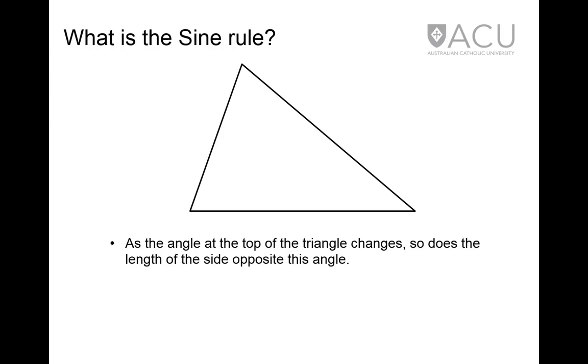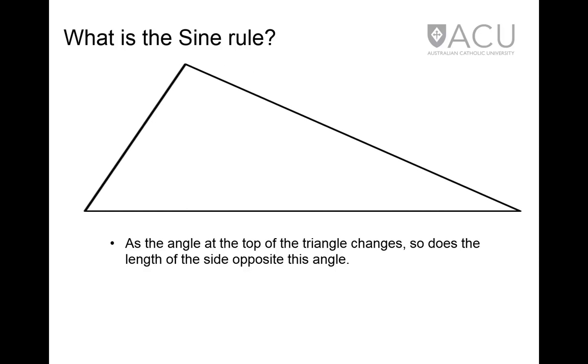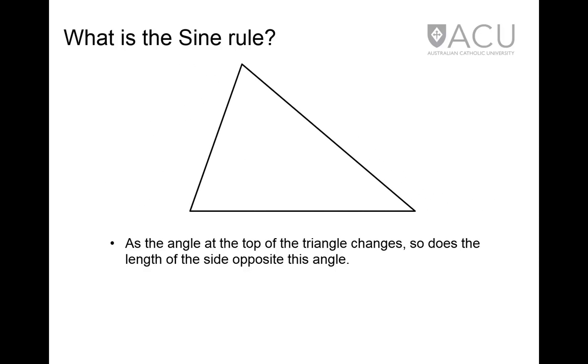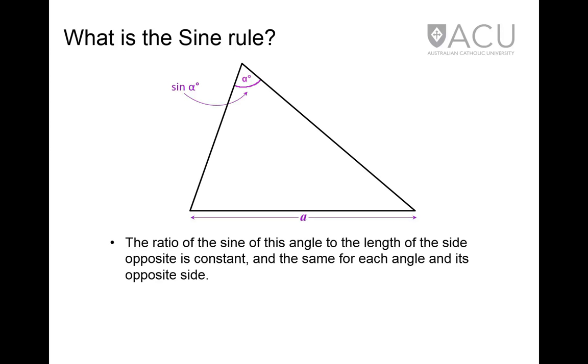Watch the angle at the top of this triangle. As it increases and decreases, so also does the length of the opposite side. The ratio of the sine of this angle to the length of the side opposite the angle is constant, and this is the same for each angle and its opposite side.